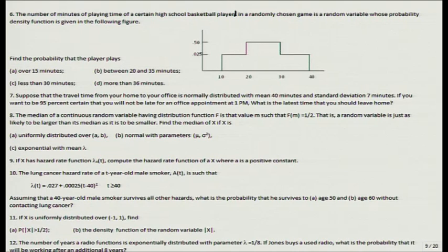Similarly, for between 20 and 35 minutes and less than 30 minutes, you find the areas directly from the graph. The area to the left of 30 gives P(x < 30). This illustrates how, when convenient, you can look at the graph of the PDF and find the required probabilities without integration.